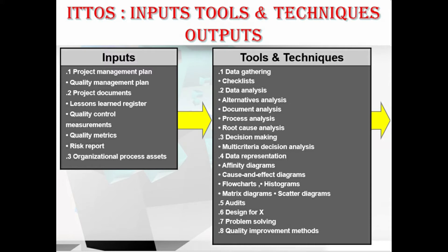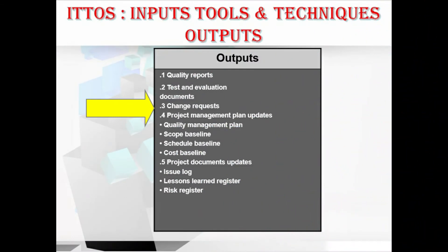The third input is organizational process assets. In tools and techniques, we have data gathering techniques consisting of the checklist, data analysis techniques including alternative analysis, document analysis, process analysis, and root cause analysis, and decision making techniques including multi-criteria decision analysis, and data representation techniques consisting of affinity diagrams, cause and effect diagrams, flowcharts, histograms, matrix diagrams, and scatter diagrams. Other tools include audits, design for X, problem solving, and quality improvement methods. Outputs include quality reports, test and evaluation documents, change requests, project management plan updates including quality management plan, scope baseline, schedule baseline, and cost baseline, and project document updates including the issue log, lessons learned register, and risk register.